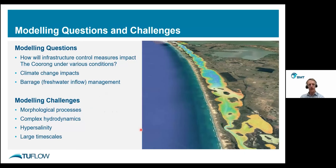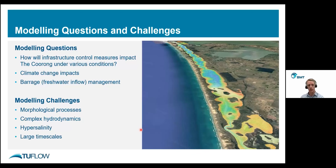With the impacts of the millennium drought, the South Australian government committed significant funding to understanding how the Coorong behaves and its hydrodynamic behaviour. Modelling has become a really valuable tool to understand these processes and how mitigation measures might be addressed, and how we can look at managing the Coorong moving into the future. The modelling questions address how infrastructure might control various water quality impacts and how they might perform under different conditions — whether dry or wet — or even under climate change scenarios, including sea level rise and its long-term effects on the health of the Coorong.